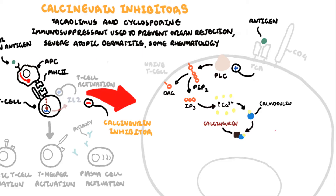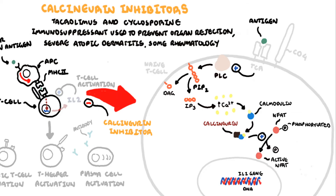When calcineurin is bound to all this, it dephosphorylates nuclear factor of activated T cells — NFAT. When dephosphorylated, NFAT targets the interleukin-2 gene to make interleukin-2 cytokines.